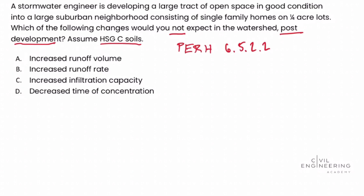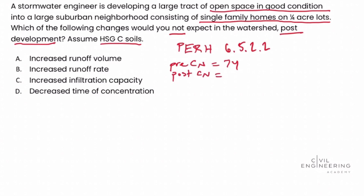In that chart, the four different types of HSG soils are along the top, each with its own column, and the different land use conditions are along the side. Looking up the pre-development land use — open space in good condition using HSG C soils — we get a pre-development curve number of 74. Using the same technique for single-family homes on quarter-acre lots in the same HSG C soil column, we get a post-development curve number of 83.